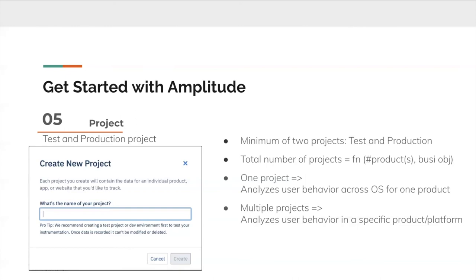However, if your setting is such that you offer multiple products — say you have game A and game B, or two different apps like a writer app and a driver app — or your users have fundamentally different experiences across different platforms like web and mobile, or maybe your organization is set up so that individual teams are responsible for each platform and operate independently, then in these scenarios you might want to consider multiple projects within your organization.